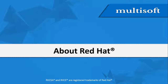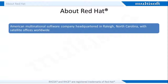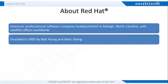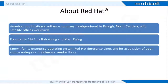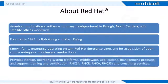Let me share some details about Red Hat. Red Hat is an American multinational software company providing open source software products to the enterprise community. It was founded in 1993 and has its corporate headquarters in North Carolina. It has become associated to a large extent with its enterprise operating system Red Hat Enterprise Linux, and with the acquisition of open source enterprise middleware vendor JBoss. Red Hat also offers Red Hat Enterprise Virtualization, i.e. RHEV, which is an enterprise virtualization product.